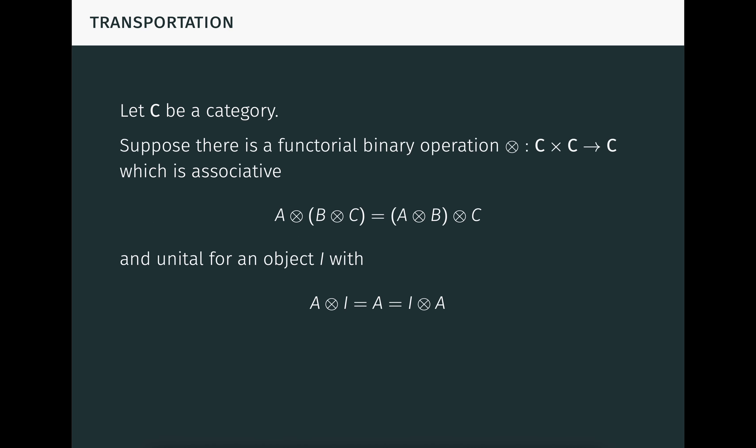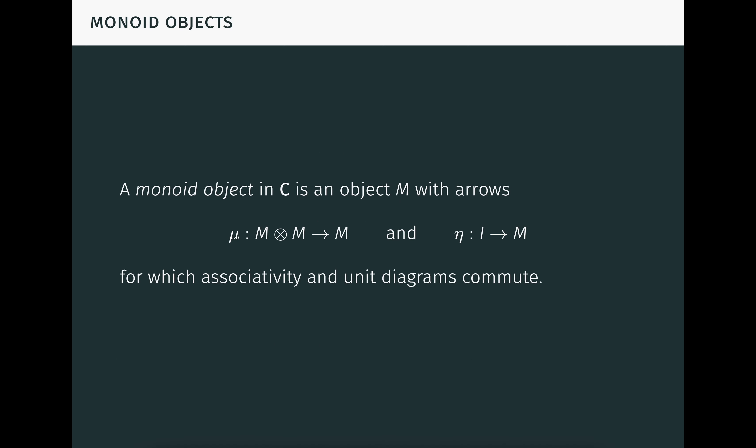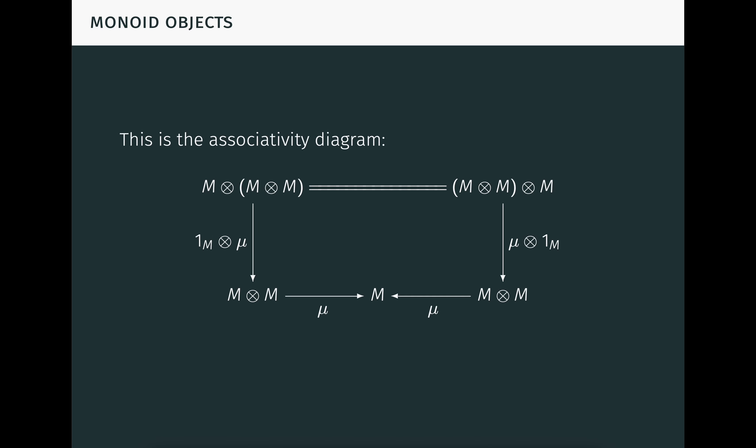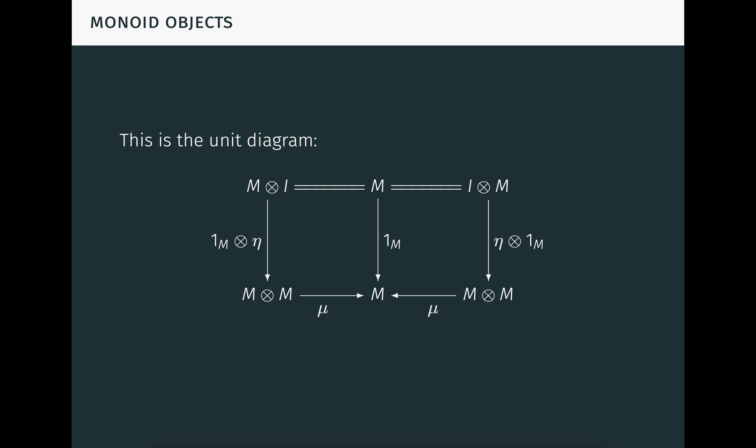Let C be a category. Suppose there's a functorial binary operation on C, which is associative and unital for an object I. The operation being functorial means that it applies to arrows as well as objects, and associativity and unity hold for arrows as well. Then C is called a strict monoidal category. It's strict because we have equalities here rather than natural isomorphisms as we had in the category of sets. The operation is called the monoidal product, and the object I is called the monoidal unit. A monoid object in C is an object M together with two arrows — mu and eta — for which associativity and unit diagrams commute. Mu is called the monoid multiplication, and eta is called the monoid unit.